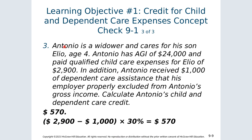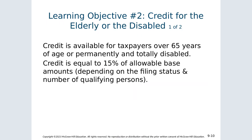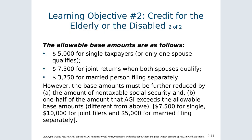There is also a credit for the elderly or disabled, available to taxpayers over 65 or permanently and totally disabled. The credit equals 15% of an allowable base amount depending on filing status. The base amounts are $5,000 for single taxpayers, $7,500 for joint returns, and $3,750 for married filing separately.